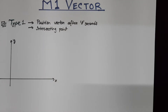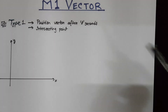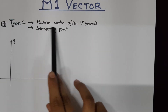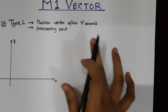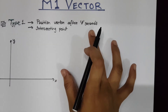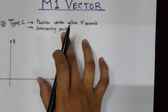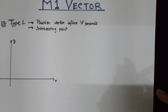In this video, I will try to cover some of the concepts on which maths of M1 vectors are based on. There are various types of maths and I will try to show how to find the position vector of a specific particle after a certain time duration and how to find the position at which two particles meet.